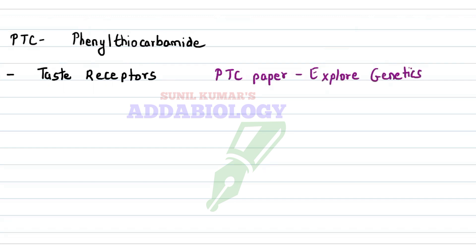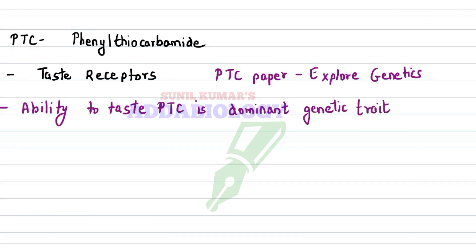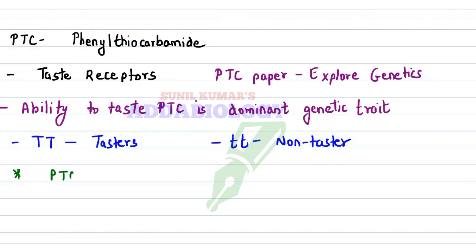Based on PTC, we can say there are two types of humans: one that has the ability to taste PTC and one which does not have the ability to taste PTC. Remember, PTC is a dominant genetic trait. Capital T capital T indicates they are PTC tasters; small t small t indicates that they are PTC non-tasters. PTC is an autosomal dominant trait and is going to express in all generations.